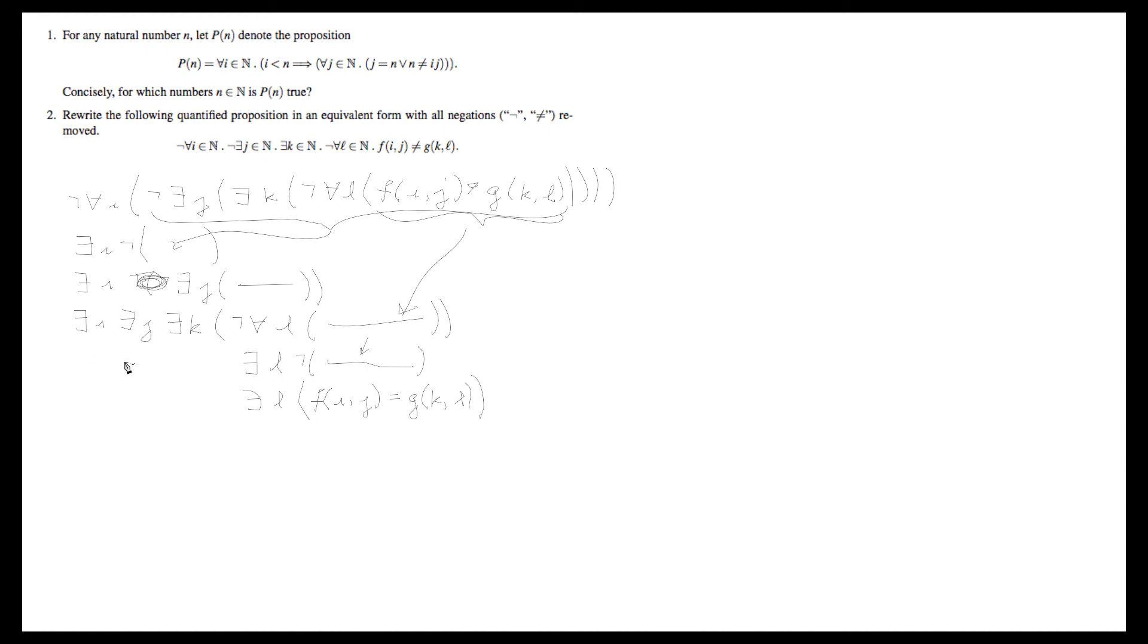I was just leaving it out for brevity. So all together we have there exists an i in n, there exists a j in n, there exists a k in n, and there exists an l in n, such that f of i comma j is equal to g of k comma l. So really the important thing to realize here is that negatives fly through quantifiers and flip them between for all and there exists, and then as soon as they hit a parenthesis or a period depending on your notation, they stop, and then you have to apply them to everything inside.